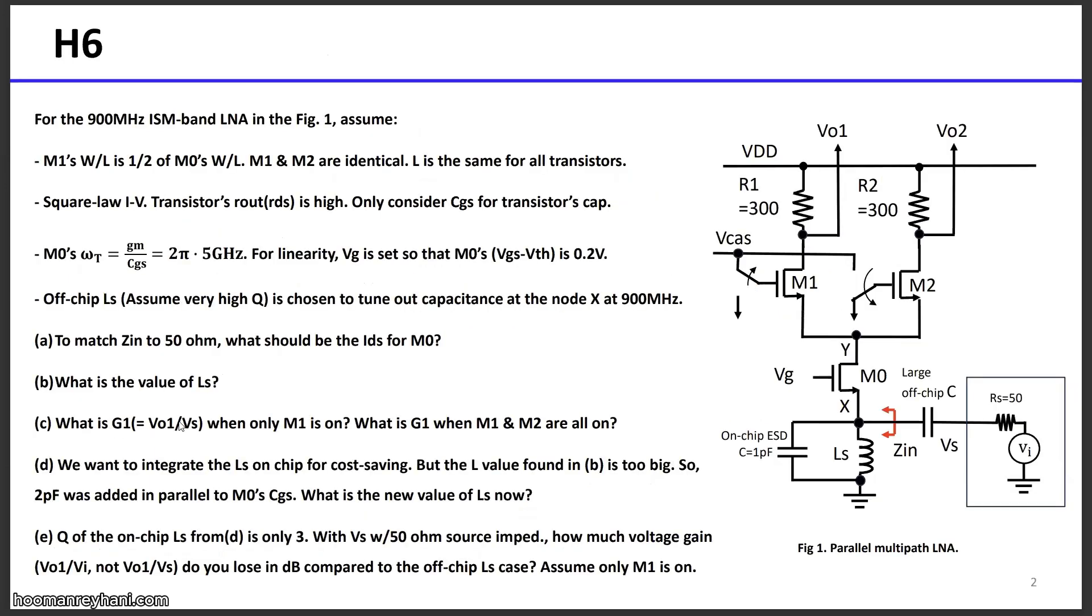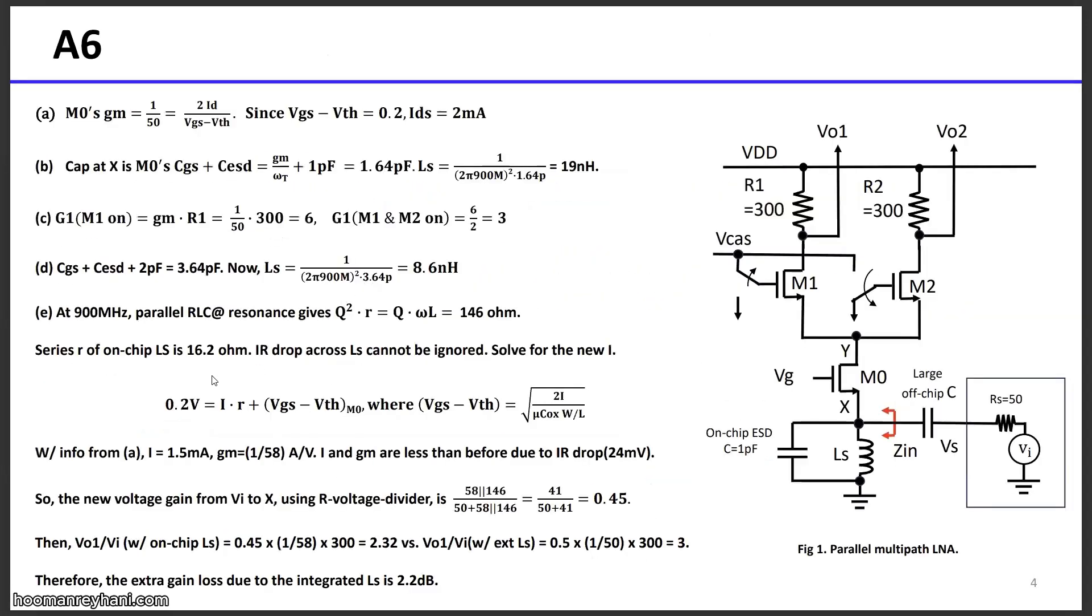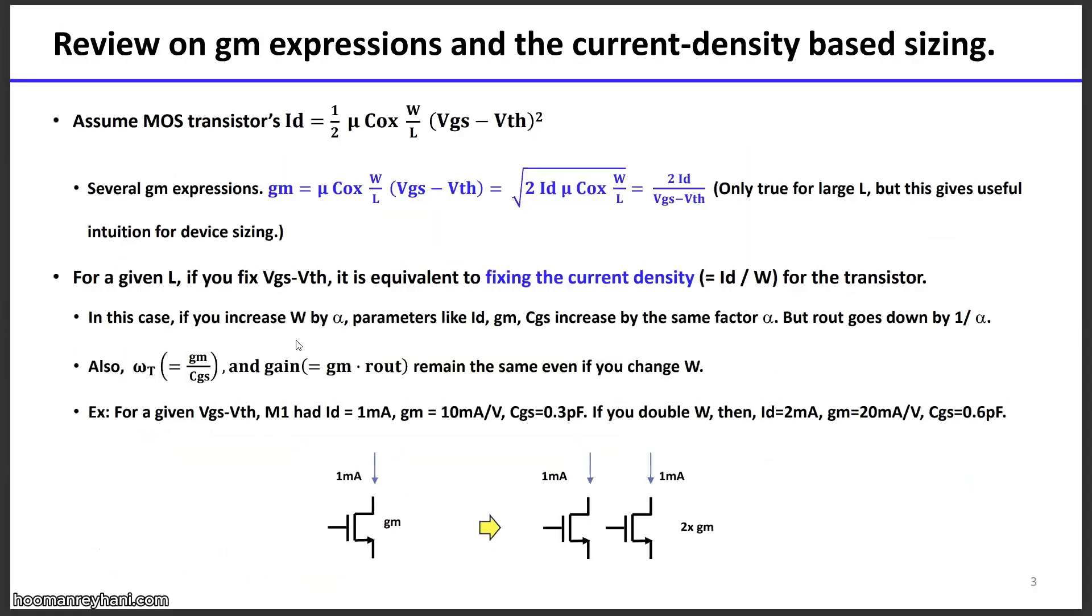So what is the gain, V01 over Vs? From here to here, what is the voltage gain when only M1 is on, so all the amplified signal goes through to the left. Also we need to find out what the gain is when M1 and M2 are on at the same time. We know that the common gate stage, the gain is simply the gm times the Rout, output resistance. In this case, gain is gm times R1, which is 300 ohm, so the voltage gain is 6. When both of them are on, the current splits half and half, so the gain drops to 3. Very straightforward for that.